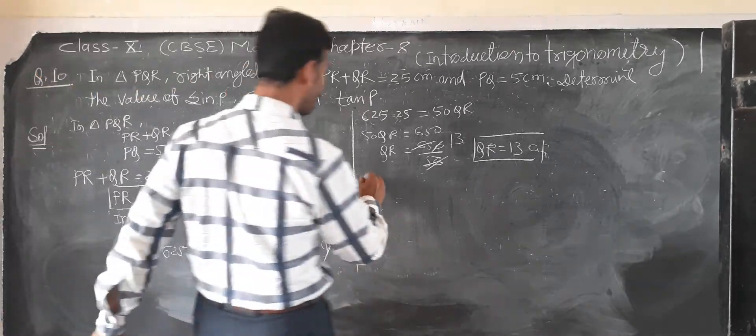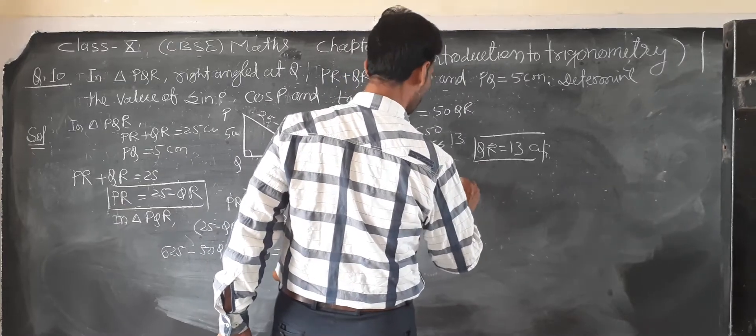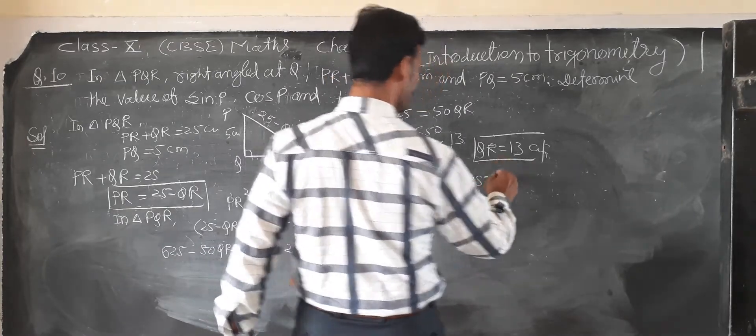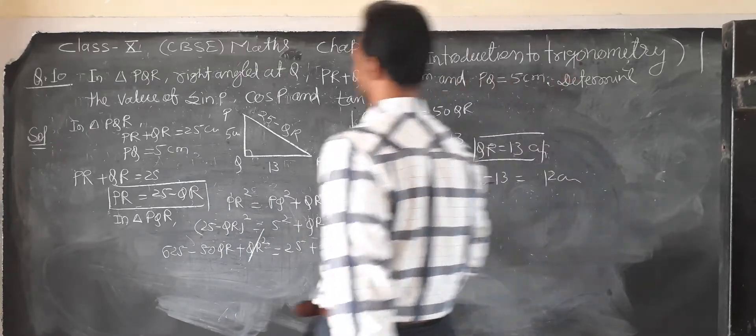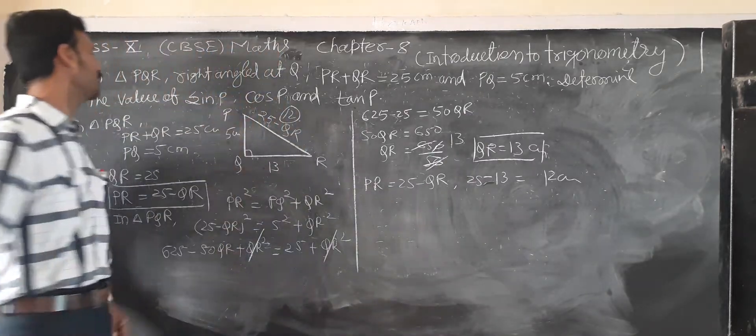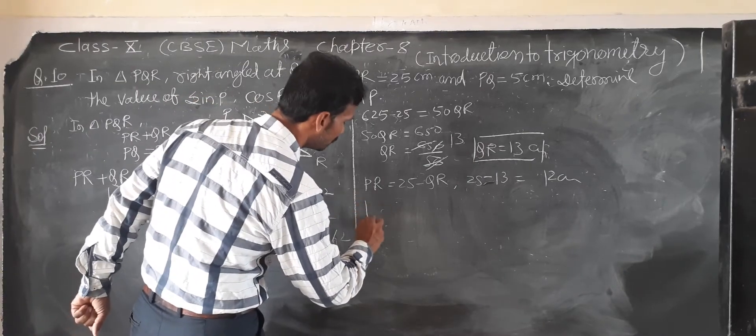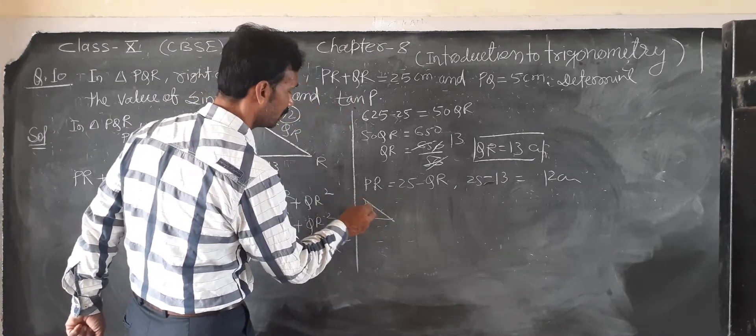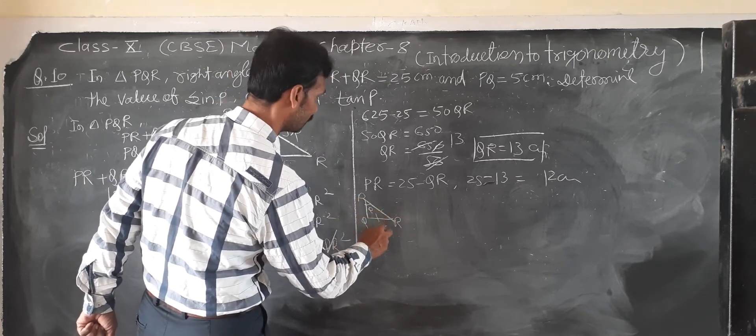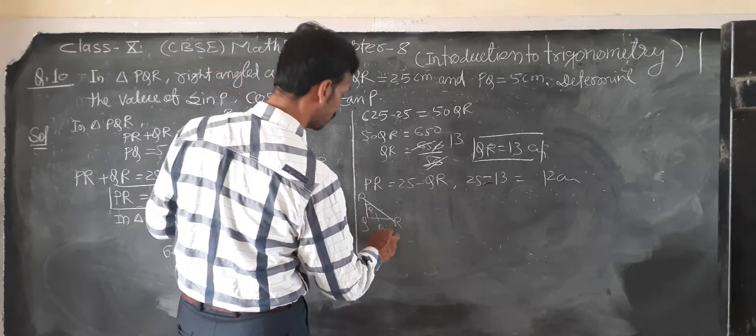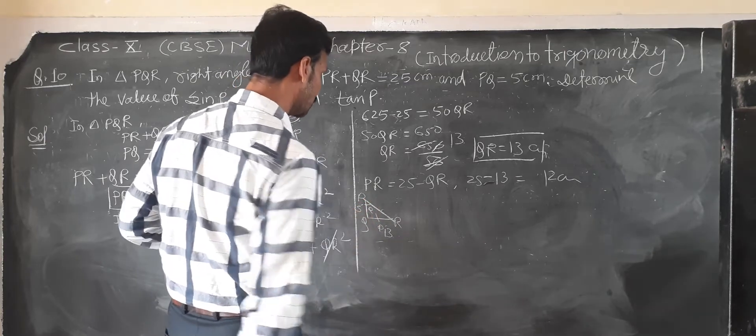Then find PR. Then PR equal to 25 minus QR. QR means 13, so P is 12 centimeter. So this is 12. Sin P, sin P, sin P. So this is theta. Sin P, so PQR. So this is perpendicular, means QR.